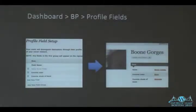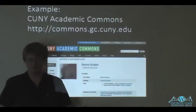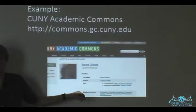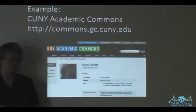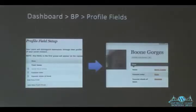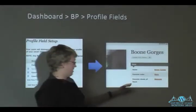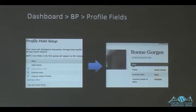Thing number one: I can customize those profile fields. Things like full name come standard with BuddyPress, but the other fields you might provide community members will differ community to community. On my heavy metal site I don't care about academic interests — I care about things like 'What's your favorite color? Black.' or 'What's your favorite shade of black? Midnight.' You can fill in whatever you want, and there are all sorts of data type options: drop-down lists, radio buttons, multiple checkboxes. Pretty slick.